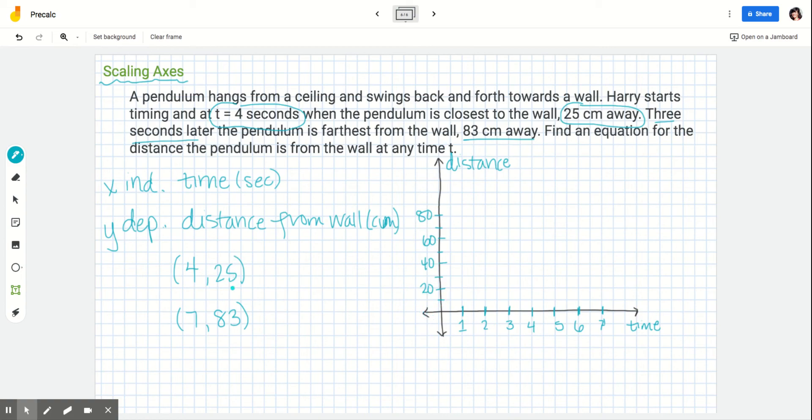So again, even though 25 and 83 aren't clearly on here, let's actually maybe go to 100 since we do have to go above 80. That's okay, we'll estimate where they are. What's more important is that the y-axis is going up at a constant rate.